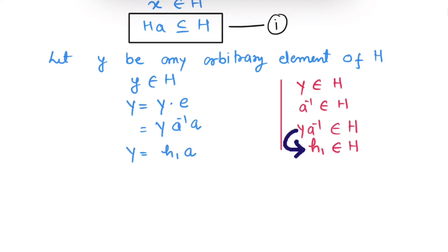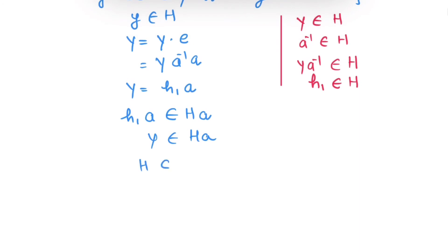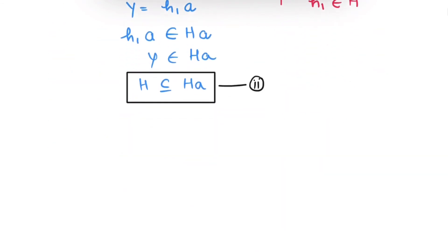Since H₁ is a member of H, we can conclude that this H₁A will belong to coset HA, and this H₁A is nothing but Y. So Y belongs to HA. So we are seeing any arbitrary element Y of H is also member of HA. So we can say H is contained inside HA. Now, suppose this is equation number 2. So from equation 1 and equation 2, we can conclude that H equals to HA. This completes the proof.